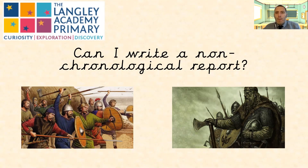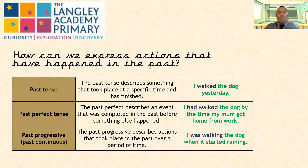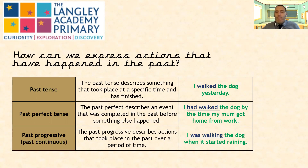First, I've got a bit of grammar to go through with you. We're going to look at using the past tense — expressing actions that have happened in the past. Simple past tense: the past tense describes something that took place at a specific time and has finished. For example, 'I walked the dog yesterday.' The action was walking the dog, and the specific time it took place was yesterday.